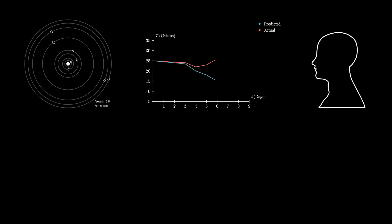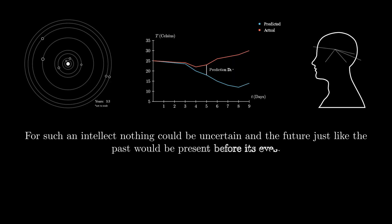Laplace poetically describes, For such an intellect, nothing could be uncertain, and the future, just like the past, would be present before its eyes. This deterministic outlook implies that the universe's future is already set, and could be predicted entirely by perfect measurements of its initial conditions. Unfortunately for Laplace, nearly 100 years after his death in 1827, a new theory would emerge which rendered his all-knowing demon powerless.